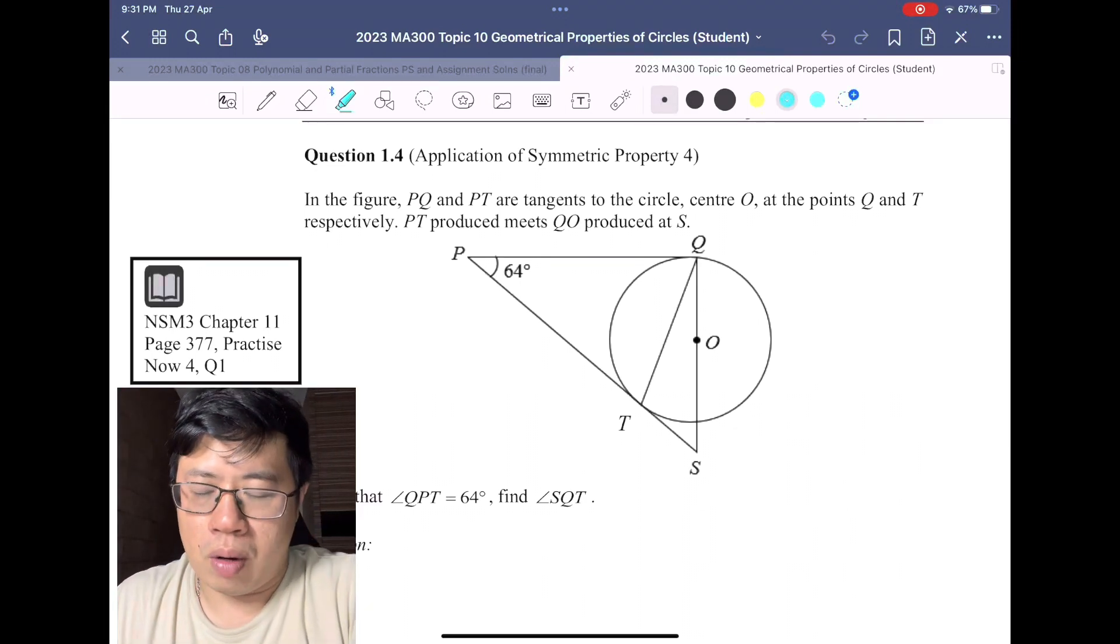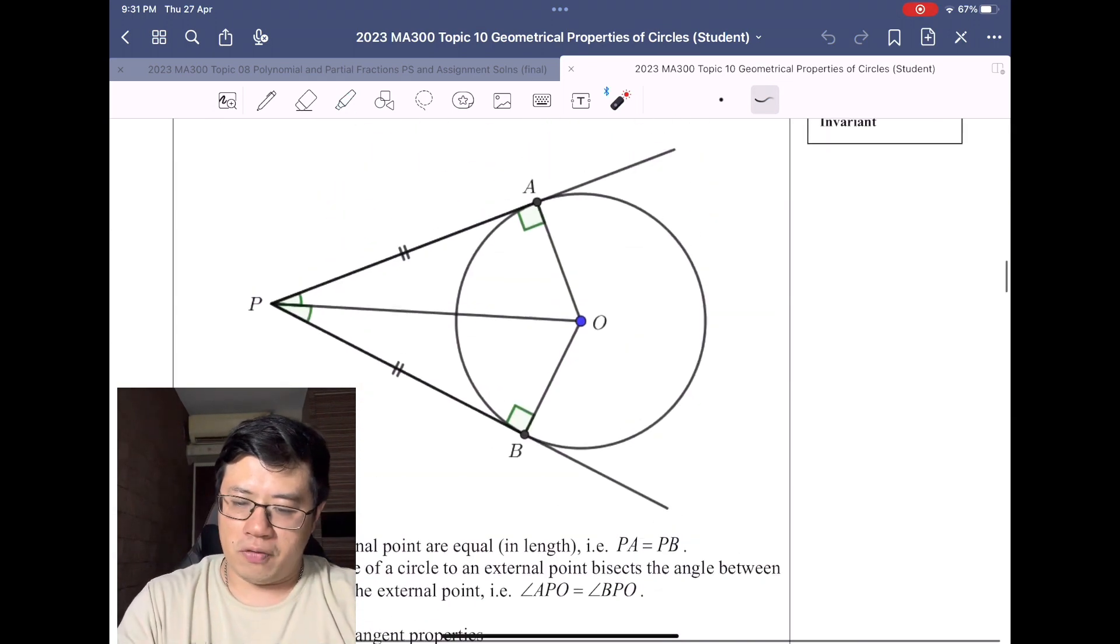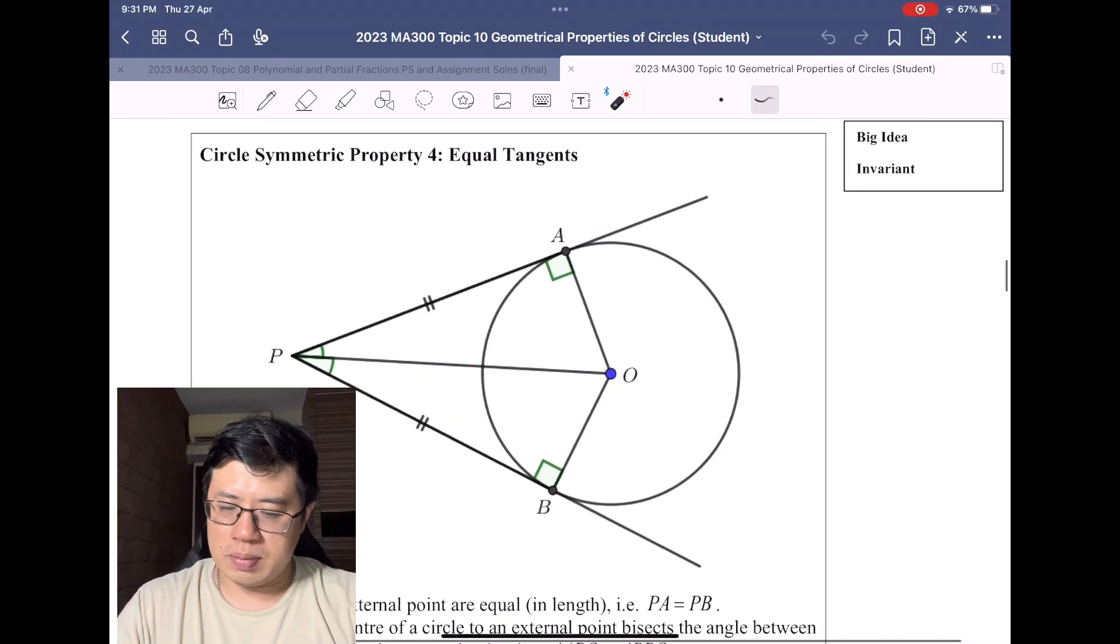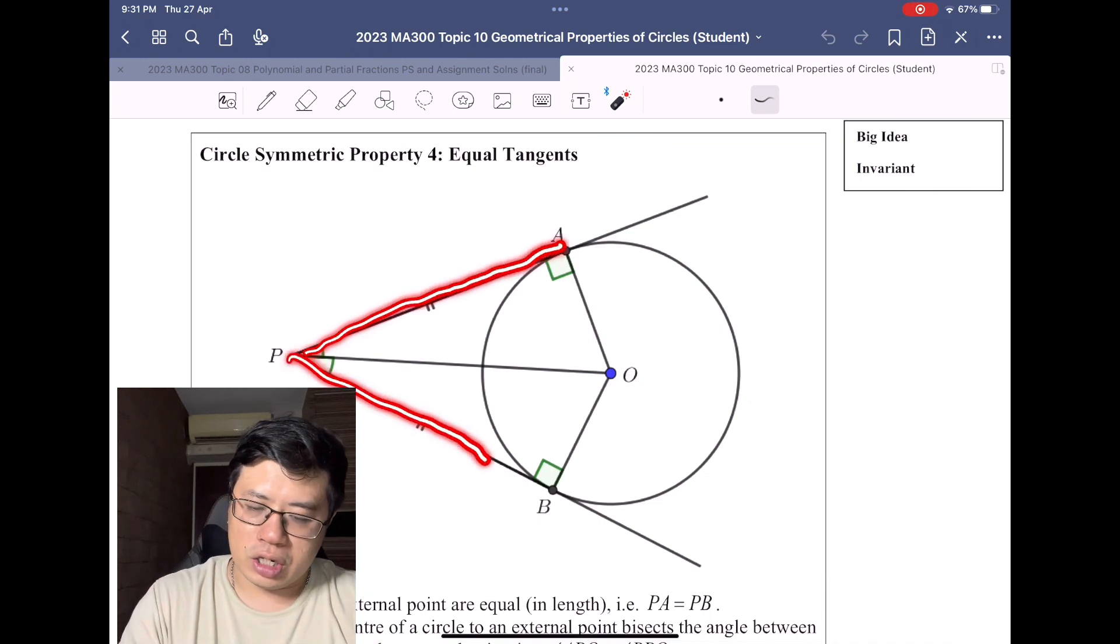Okay, so this is question 1.4, an application of symmetric property 4. In case you're not sure what this is, this means tangent from an external point, or basically equal tangent. If we have two tangents shooting from an external point onto a circle...